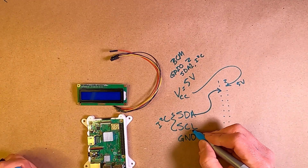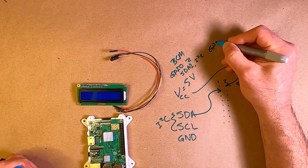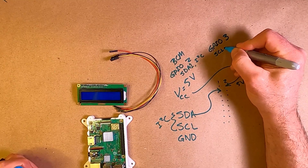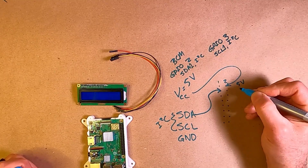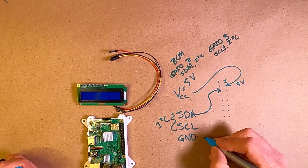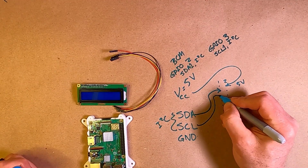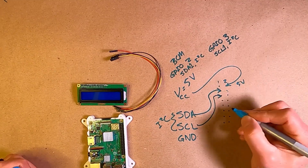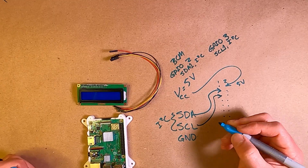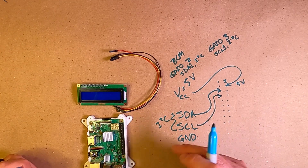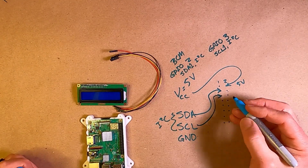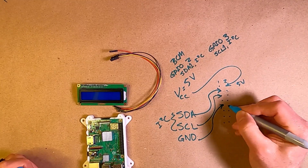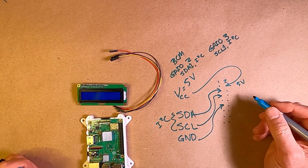For SCL, we connect to GPIO pin 3, which is SCL1 for the I2C interface from the Raspberry Pi. That goes to physical pin 5 on the header. Then we need a ground — we're going to connect it to pin 9 on the header.